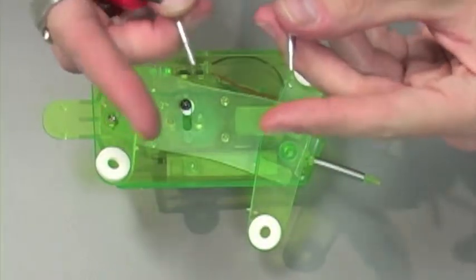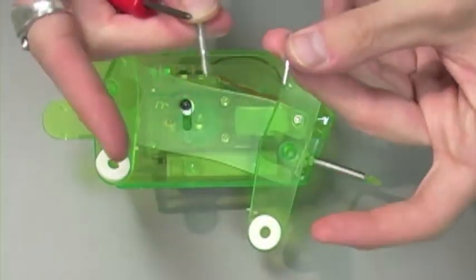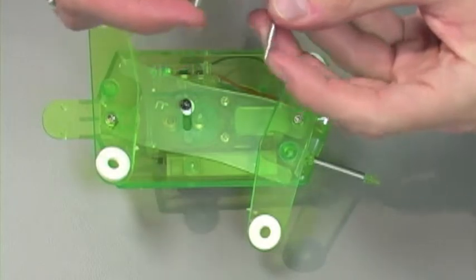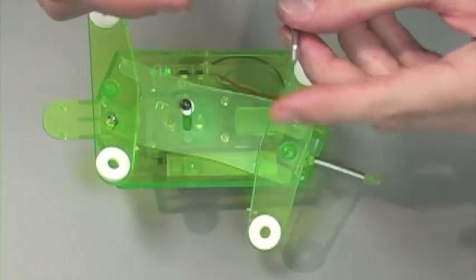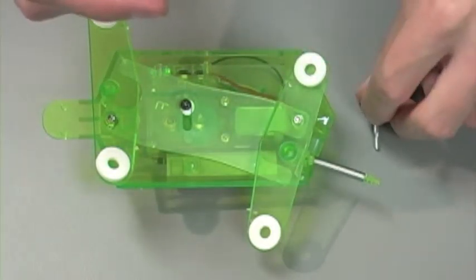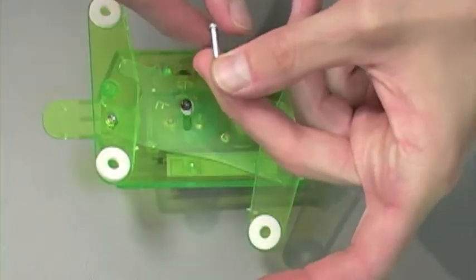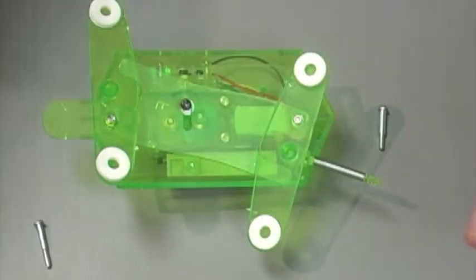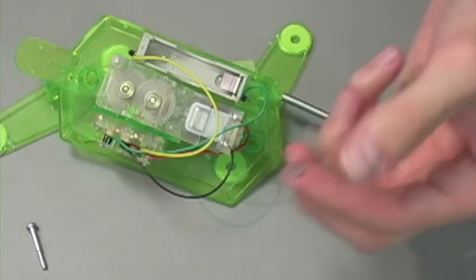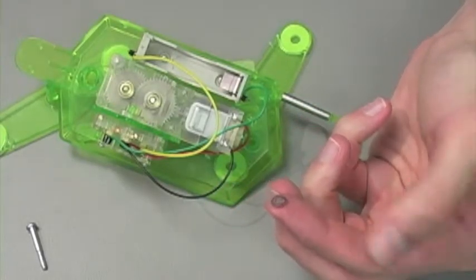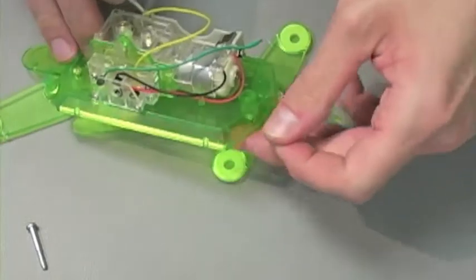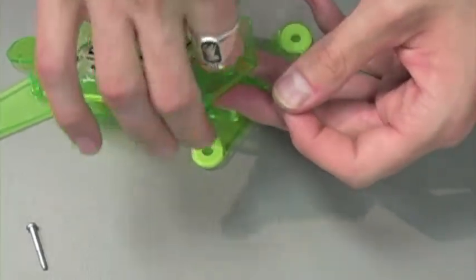Please note that the two remaining step screws are very similar in size. One is 3x20, which we will use on the tail end, and one is 3x21, which we will use on the opposite side. Again, let's take one of our larger washers and use that to separate both halves of the robot.